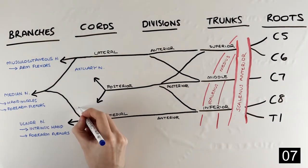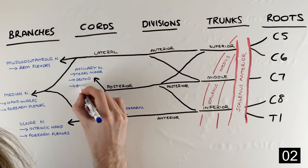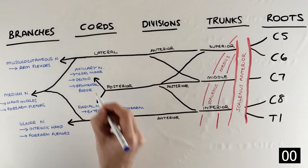The radial nerve controls the extension of the arm and forearm, while the axillary nerve supplies teres minor and deltoid.